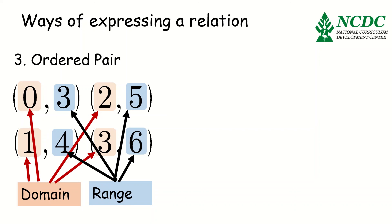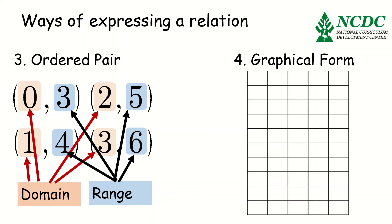The last way of expressing relations is by using a graphical form. Graphical form, if you have ordered pairs, now you can easily figure out what the graphical form is all about. This is our graph and therefore we can plot the ordered pairs on the graph as shown. Those are the four ways of expressing a relation.